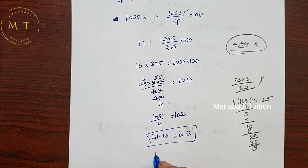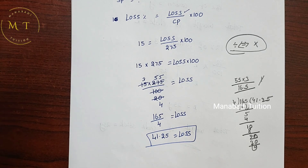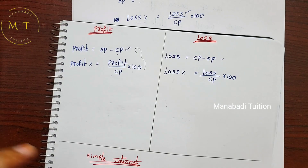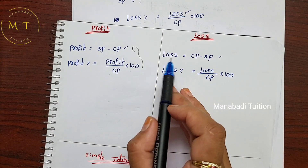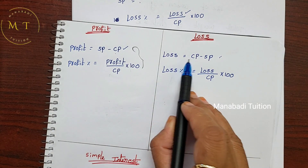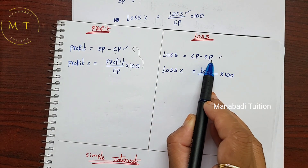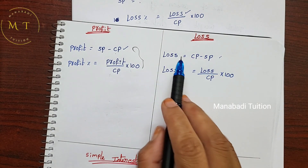Now we will find out the selling price. The formula is: loss is equal to cost price minus selling price.